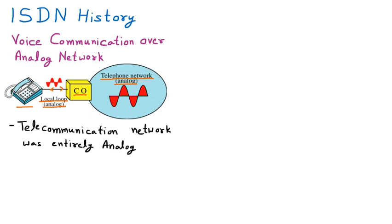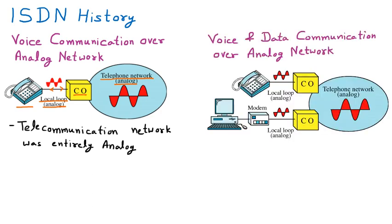The next stage in ISDN history is voice and data communication over an analog network. Here we have both data and voice: voice means telephone, data means internet. These two things work on the same analog network provided by the telephone company — the subscriber exchanges both data and voice.